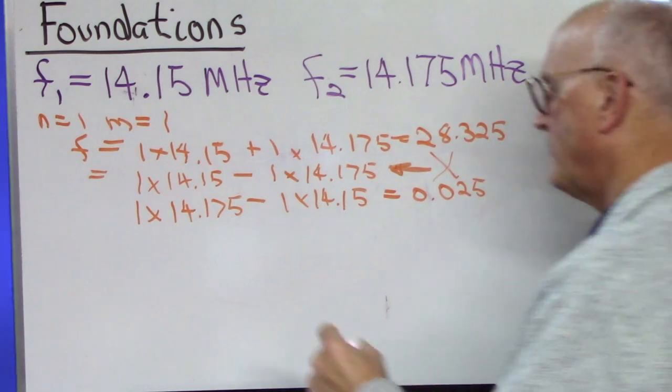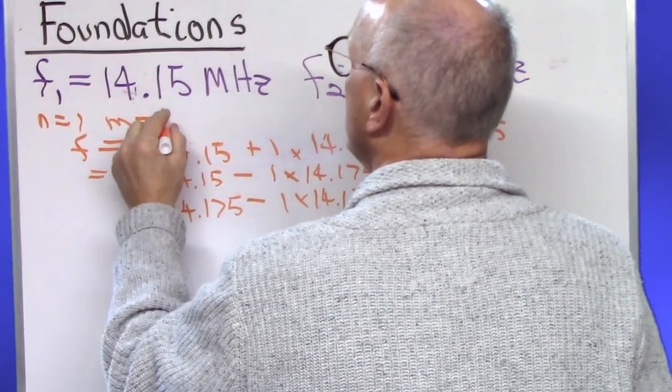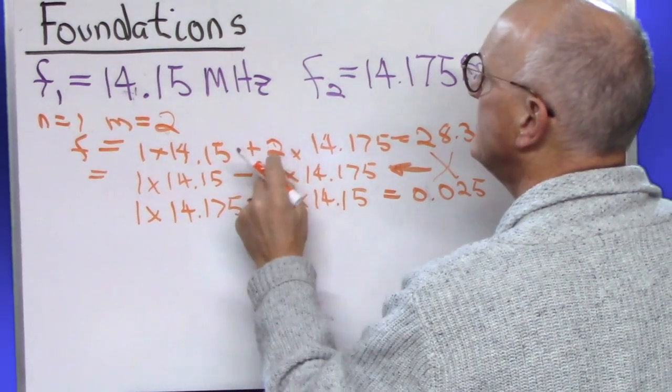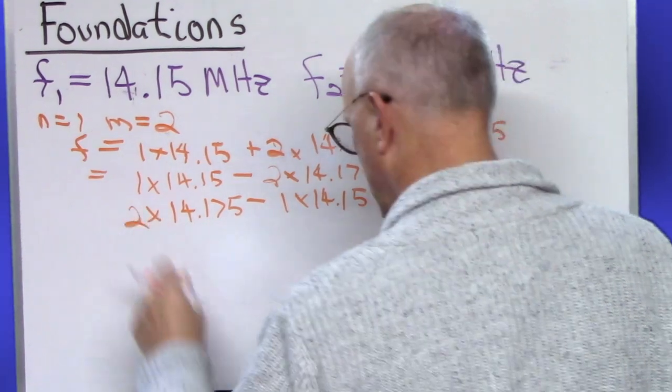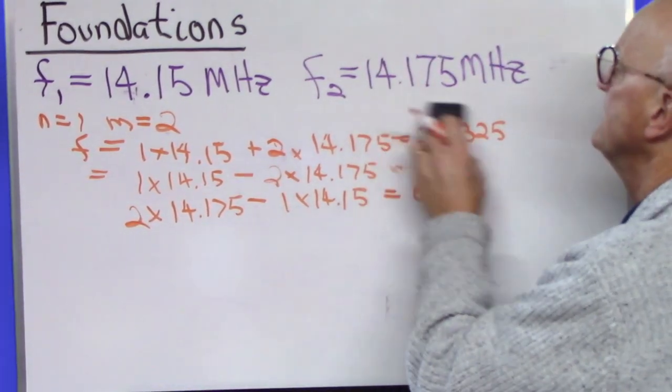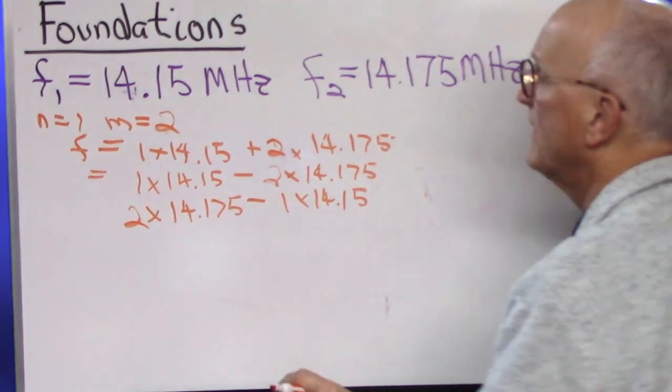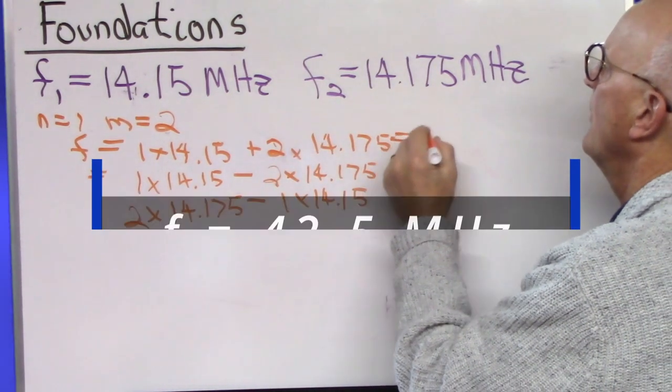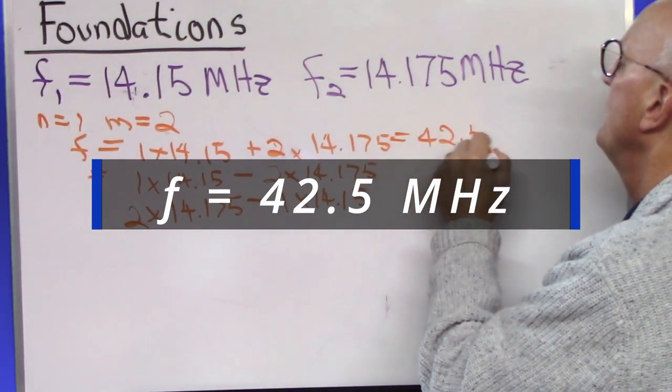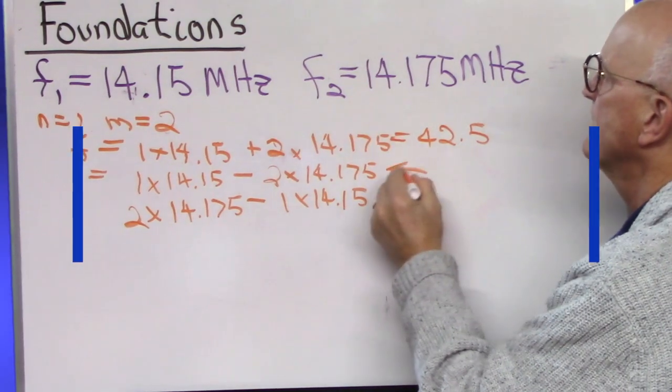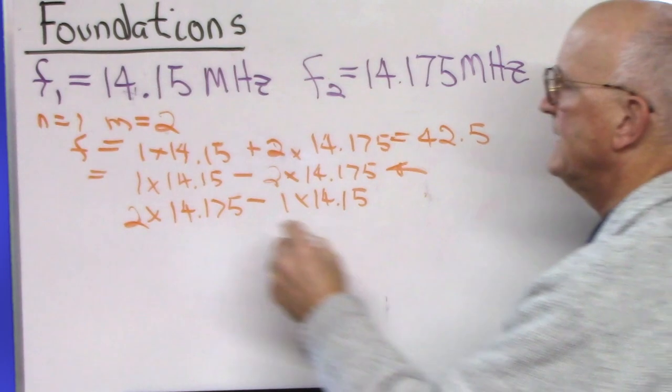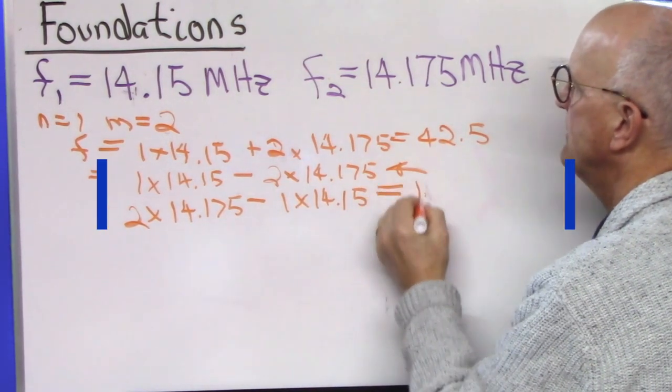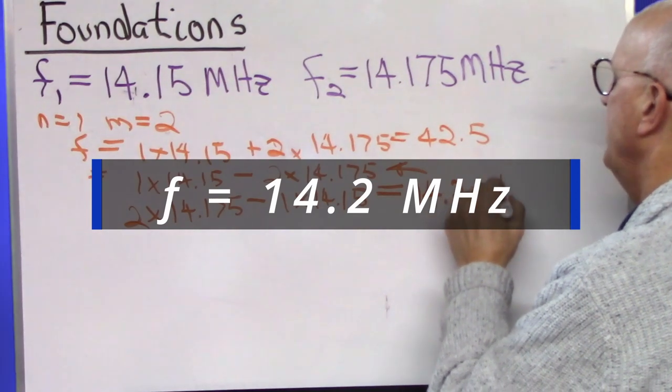Okay, let's take the example here of n equals 1 and m equals 2. Alright, so this turns to a 2, this turns to a 2, and this turns to a 2. Let's see what we get. Let's erase our results over here. So, 1 times 14.15 plus 2 times 14.175 comes out 42.5 megahertz. This one is still going to be negative, so we ignore that one. 2 times 14.175 minus 1 times 14.15 comes out to 14.2 megahertz. That's right nearby.